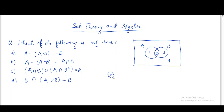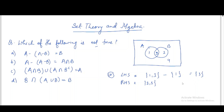In option (a), the left-hand side is A minus (A minus B). A is {1, 3} and A minus B is {1}, so A minus {1} gives {3}. The right-hand side is B, which is {2, 3}. Left-hand side is {3} and right-hand side is {2, 3} — they are not equal, so this is not true. Option (a) is the correct answer.